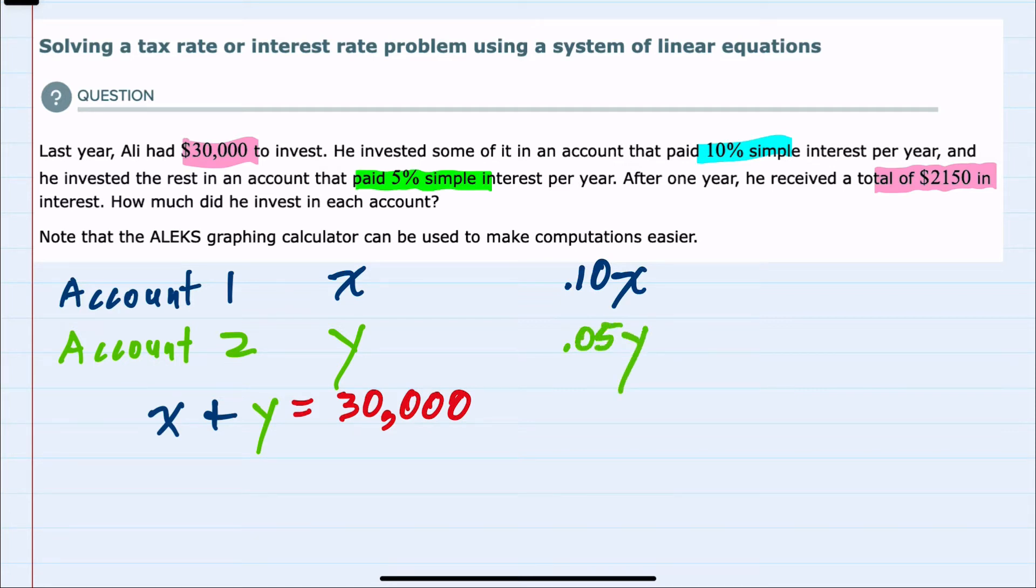Now that we've written the interest from account 1 and the interest from account 2, we know that the total interest is $2,150. So my second equation is 0.10X plus 0.05Y equals $2,150.